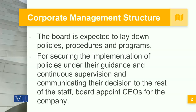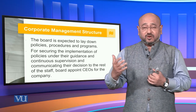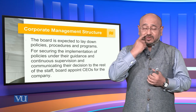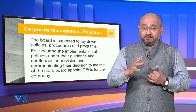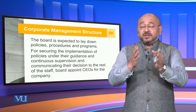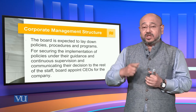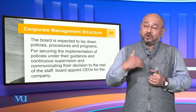The policies, procedures, and programs finalized by the board are implemented by the Chief Executive Officer and his team, usually called C-suite officers. These include the Chief Financial Officer, Chief Operating Officer, Chief Information Officer, Chief Human Resource Officer, Chief Knowledge Officer, and Chief Training Officer. All these chief officers form the core team of the CEO, who is appointed by the board to secure implementation of the different policies.